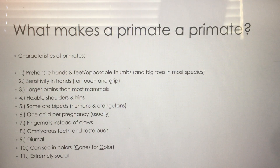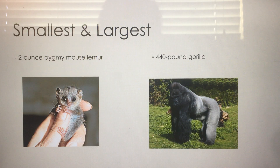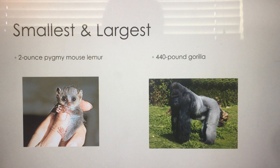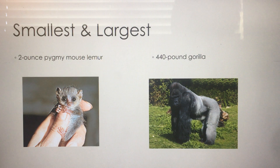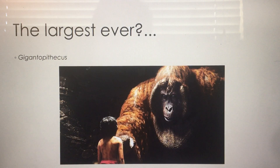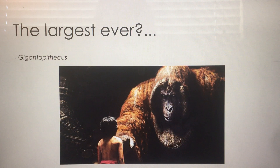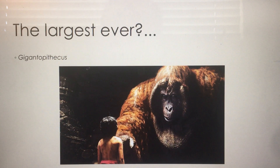Primates are also quite diverse. Today you have the tiny pygmy mouse lemur and the large mountain gorilla, with humans somewhere in between. The largest primate ever believed to have existed is Gigantopithecus — we talked about that earlier this semester in the context of Bigfoot. In the reboot live-action Jungle Book movie, the large ape character is not an orangutan but Gigantopithecus, a distant relative of the orangutan and one of the great apes that is now extinct.